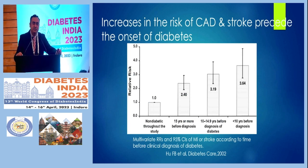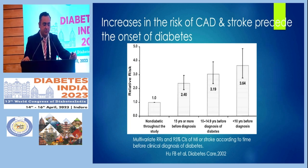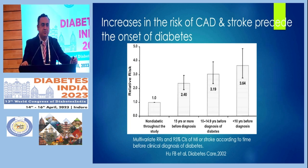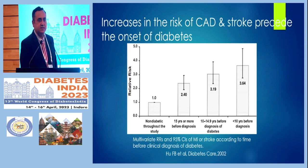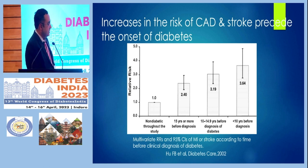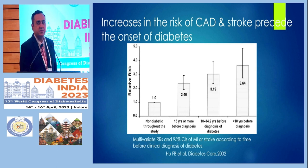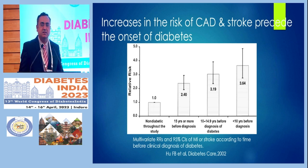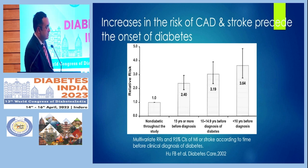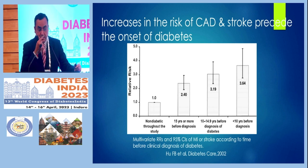Once there is a tremendous increase in obesity, the risk of Coronary Artery Disease increases and will also precede the onset of Type 2 Diabetes. In the very famous Nurses Health Study, the occurrence of coronary artery disease and stroke was found even 15 years before the diagnosis of Type 2 Diabetes. Type 2 Diabetes is often diagnosed very late, but cardiovascular risk starts 15 years earlier.